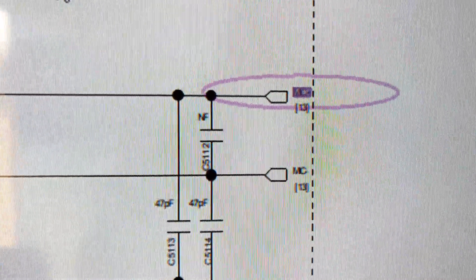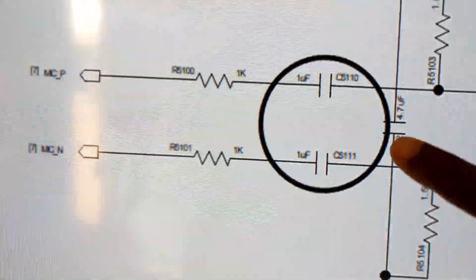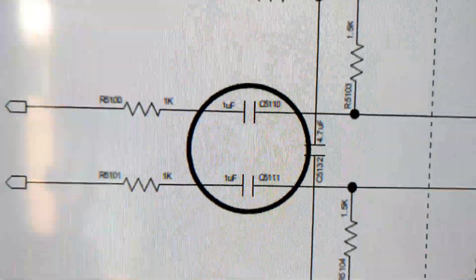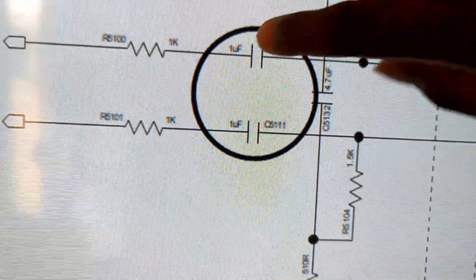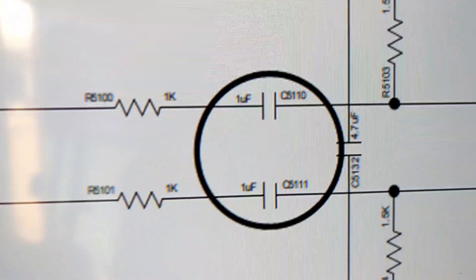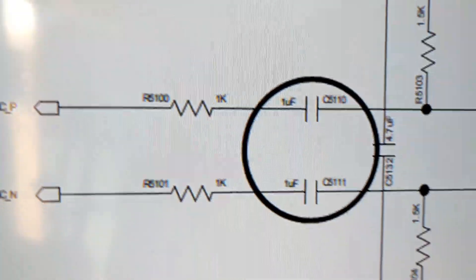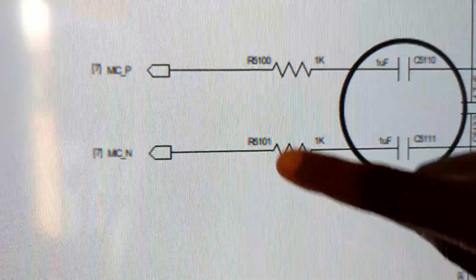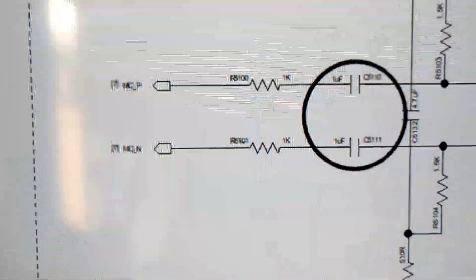If you have a problem like an open circuit, you can jumper from these two capacitors right here. Using this schematic diagram, just search the component number, go to the PCB layout, paste it, and you will find the exact position where these two capacitors are located.